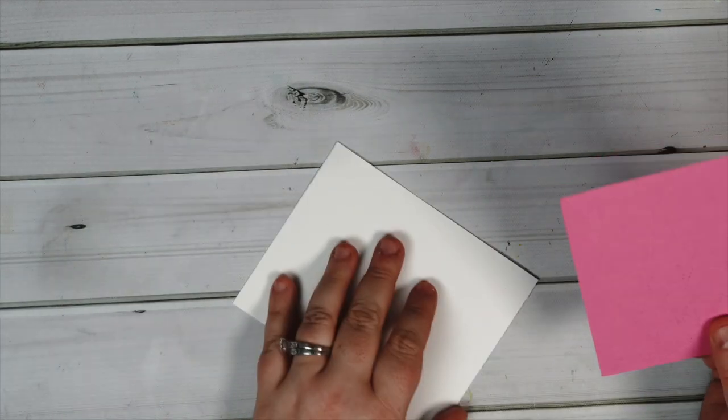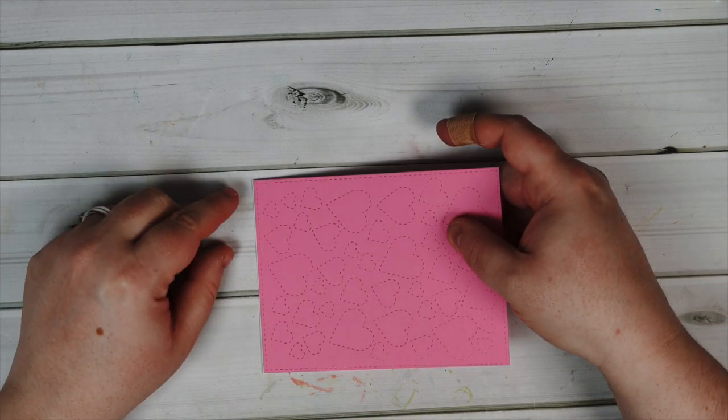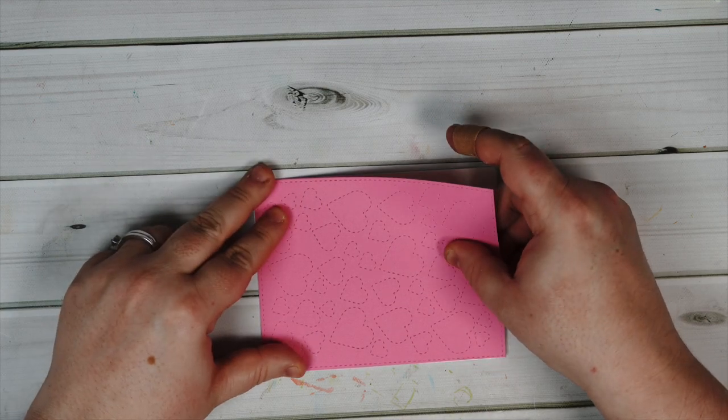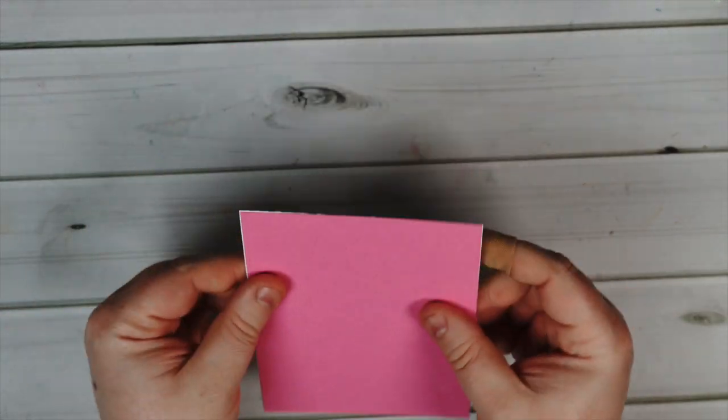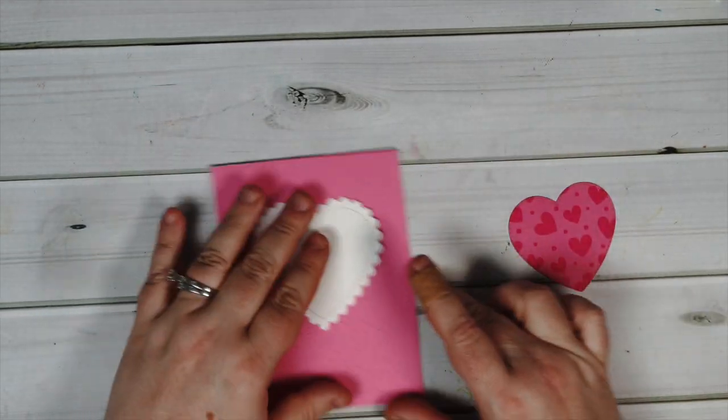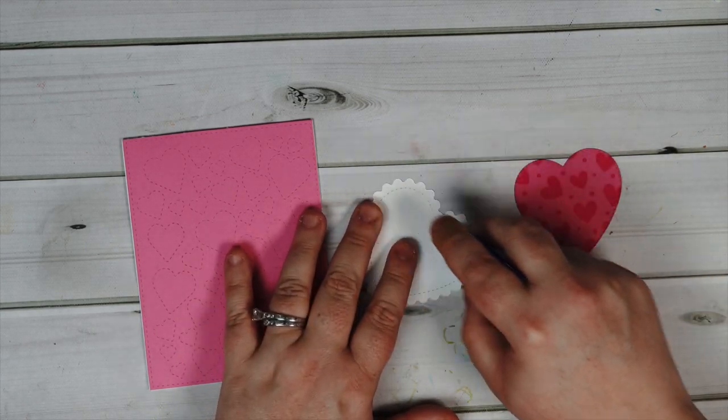I'm using some glue runner to attach my layers and it's really easy to do for this card since the back layer is the same size as my card base, so I didn't have to line it up or worry about my layers not being straight.